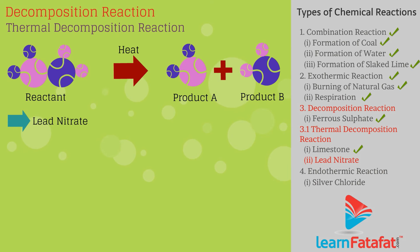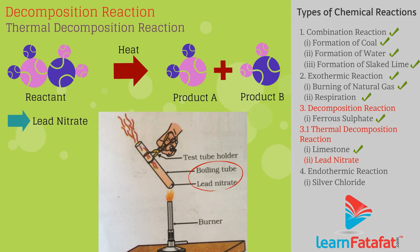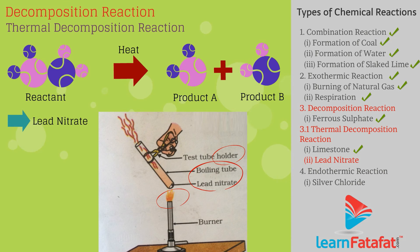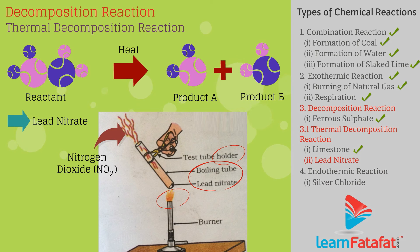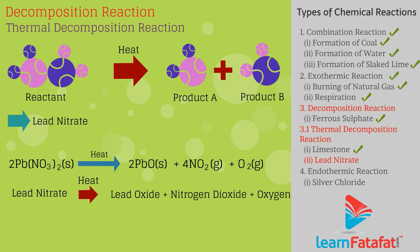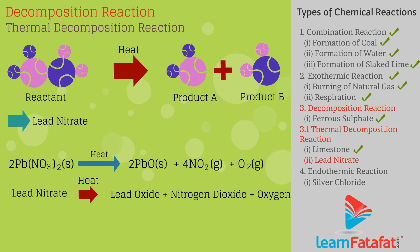Take 2g of lead nitrate powder in a boiling tube. Hold the boiling tube with a pair of tongs and heat it over the flame. The emission of brown fumes of nitrogen dioxide (NO₂) takes place: 2Pb(NO₃)₂ → 2PbO + 4NO₂ + O₂ (on heating).